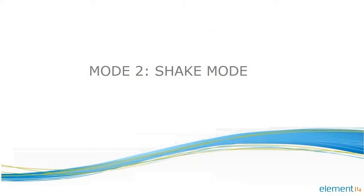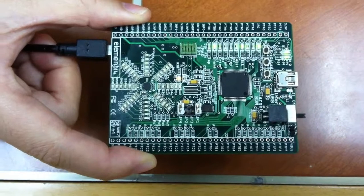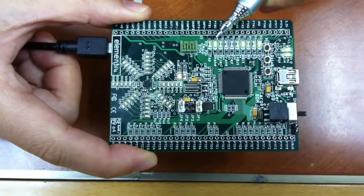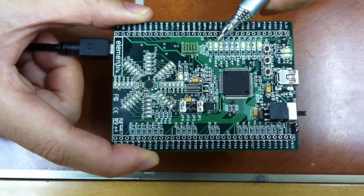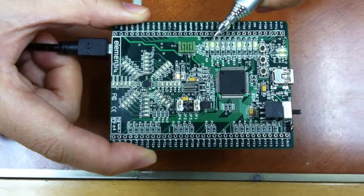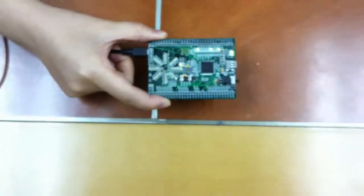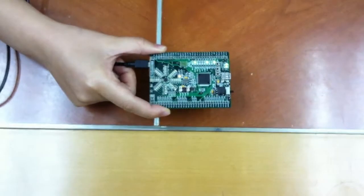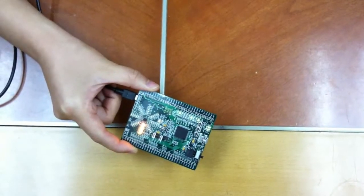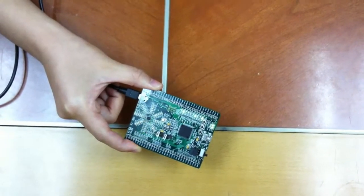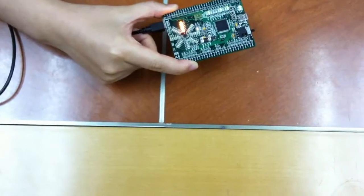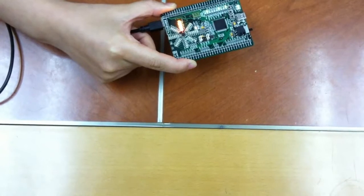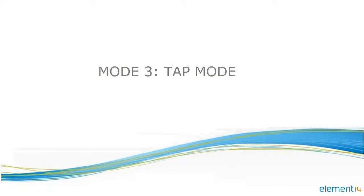Mode 2 is Shake mode. Try flicking the board in a direction — either up or down, left or right, or forward or backward. You need to use a sharp flick. The orange LEDs will point in the direction of the initial flick, resetting after a couple of seconds.